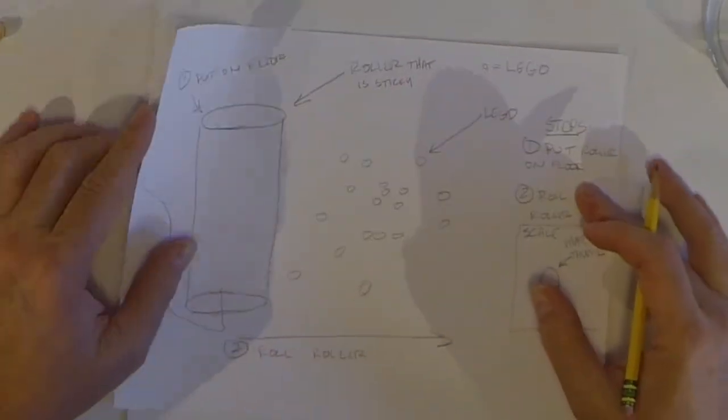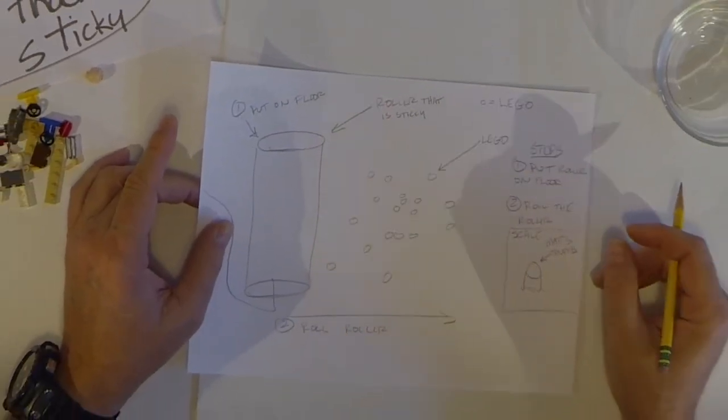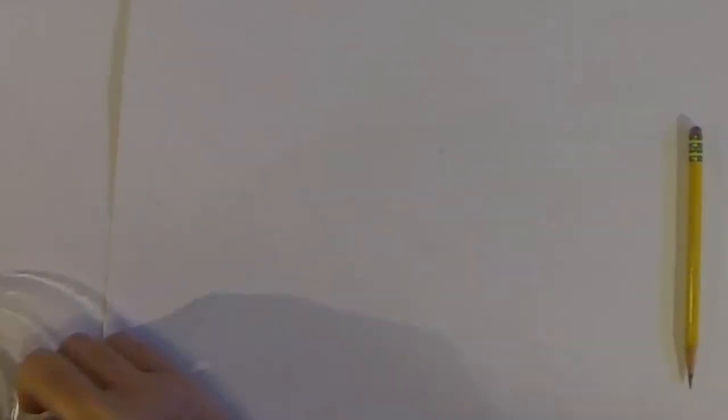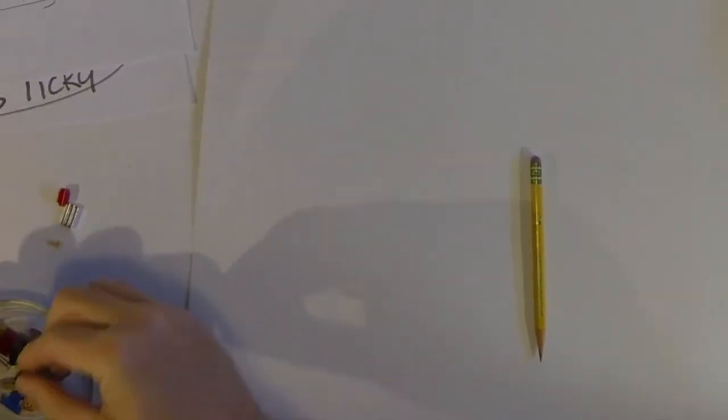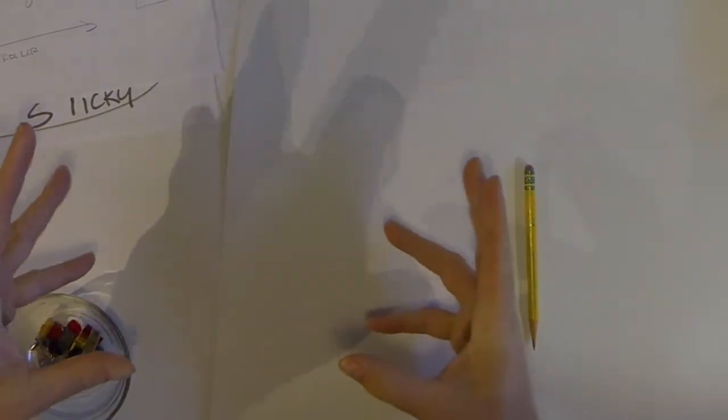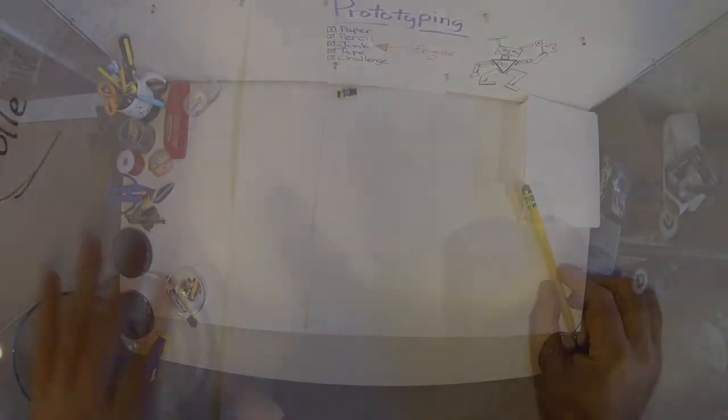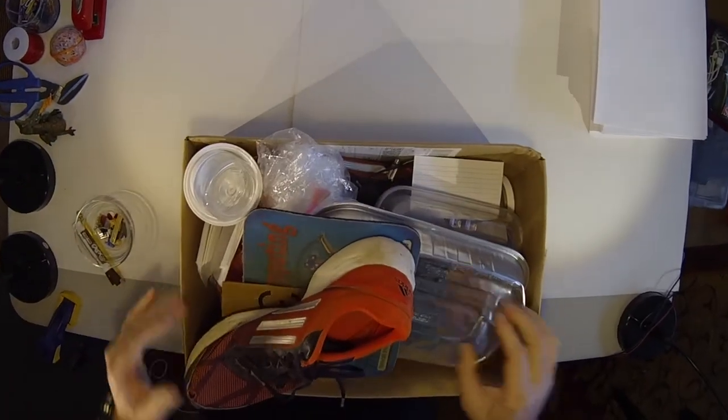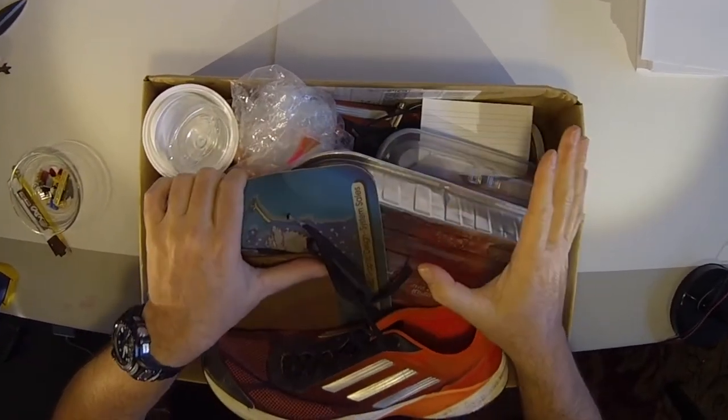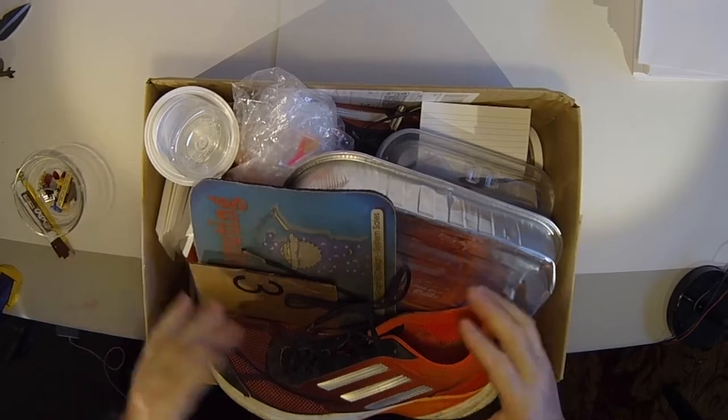What we're going to do now is move on to a 3D version of the prototype. Now, the 3D version of the prototype requires us to have stuff. We need junk. It's our junk box. We have a lot of stuff in our junk box. In fact, we have too much stuff in our junk box, so we have to get rid of some of this stuff.